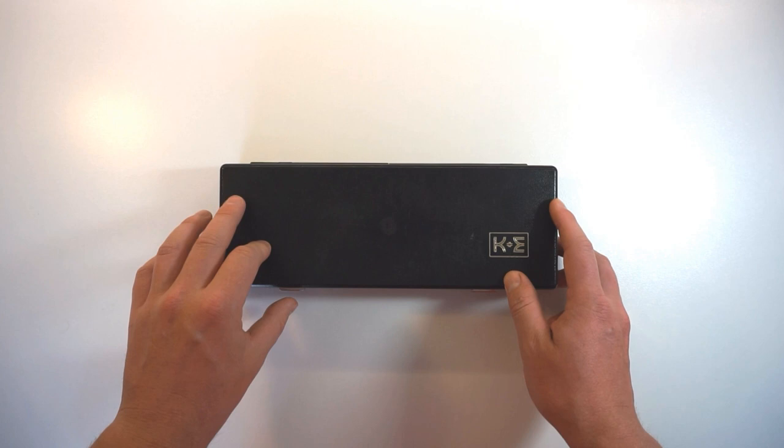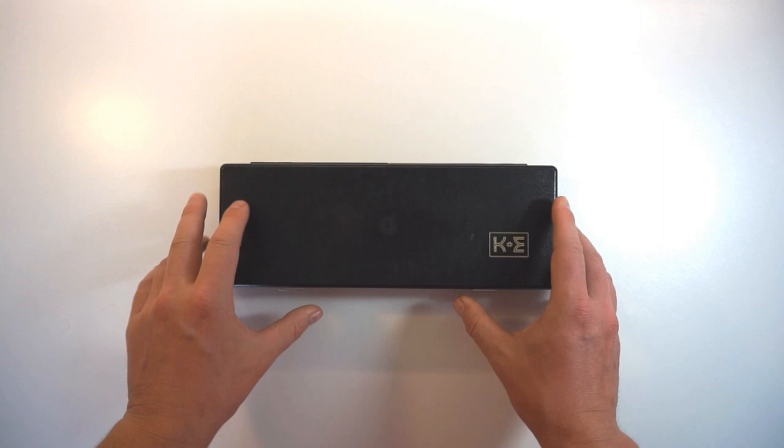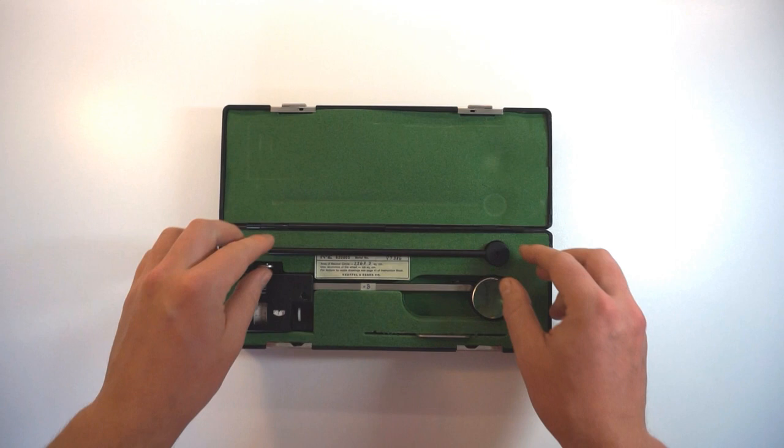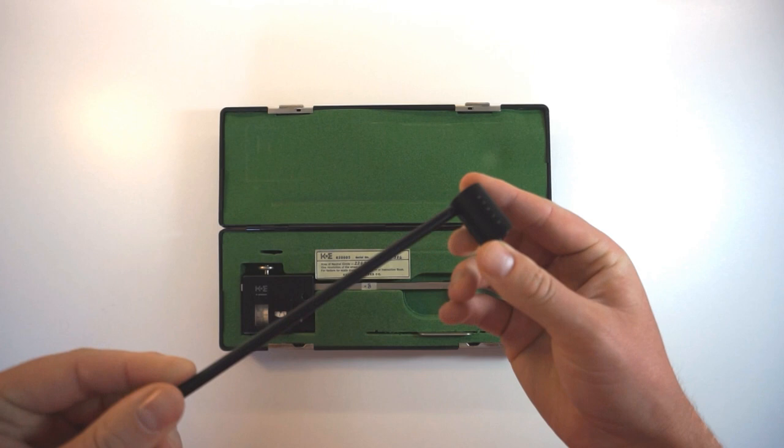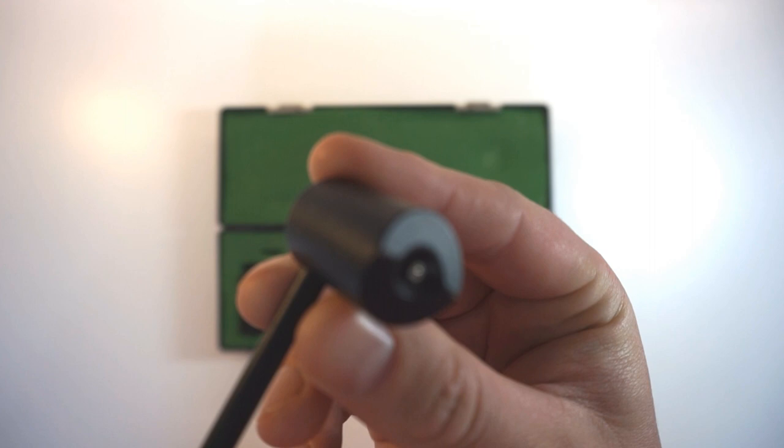So we open it up and it consists of two main parts. We have a long arm here and this end here is quite heavy. It's a weighted end and it has a little needle as well. It's a very sharp needle and this end is anchored in place while this end moves around.